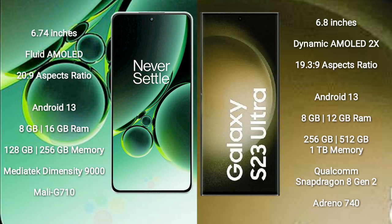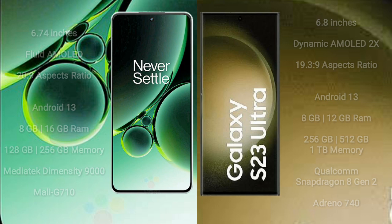OnePlus Nord 3 comes with 8GB or 16GB RAM and 128GB or 256GB internal storage, with a MediaTek Dimensity 9000 processor and Mali-G710 GPU. Samsung Galaxy S23 Ultra comes with 8GB or 12GB RAM and 256GB or 512GB or 1TB internal storage, with a Qualcomm Snapdragon 8 Gen 2 processor and Adreno 740 GPU.